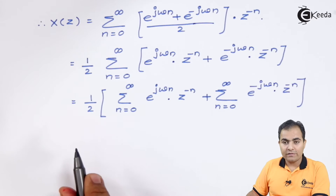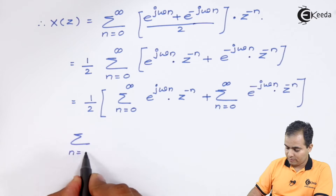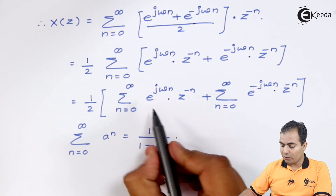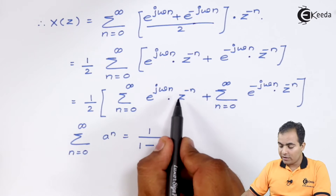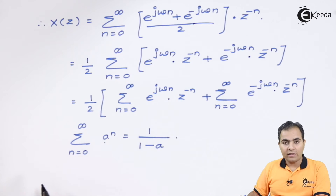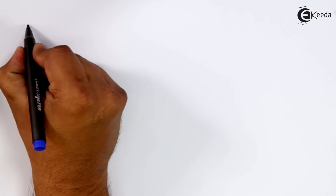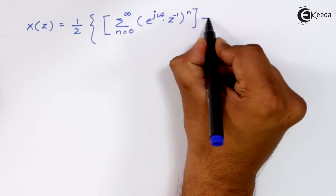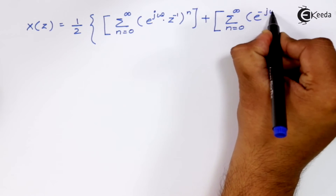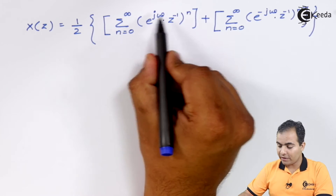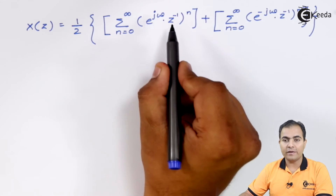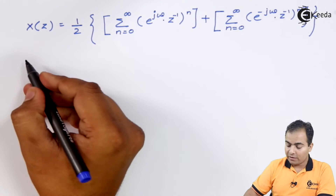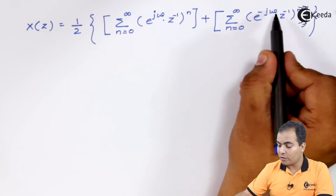One formula studied previously is: the summation from n=0 to infinity of a^n equals 1/(1−a). If I take n common in the power, what remains inside the bracket is my base. On both sides I take n common in the power. From the first bracket we get e^(jω) · z^(−1), and from the second bracket e^(−jω) · z^(−1). Let e^(jω) = a and e^(−jω) = b.